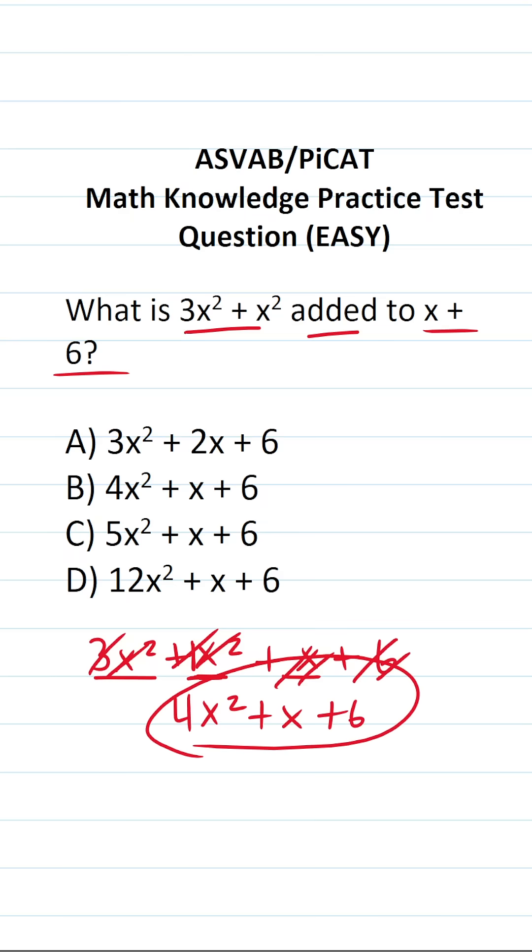So our answer is going to be 4x squared plus x plus 6. We can see that that is answer choice B.